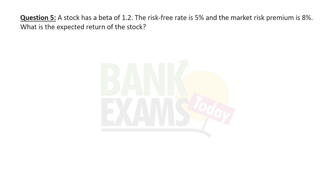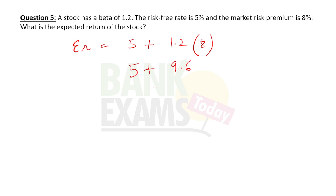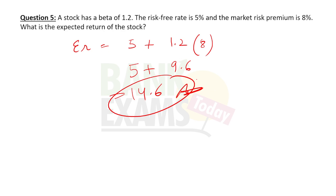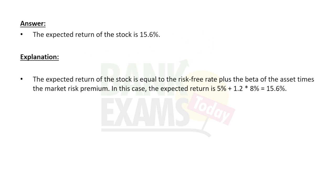Numerical 4: A stock has a beta of 1.2, risk-free return is 5%, and market risk premium is 8%. What is the expected return? ER = RF + B × Market Risk Premium = 5 + 1.2 × 8 = 5 + 9.6 = 14.6%. The correct answer is 14.6%.